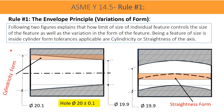In the first figure, a tolerance zone of cylindricity form error is shown, whereas in the second figure a tolerance zone for straightness error is shown. In both cases, the tolerance zones of cylindricity and straightness are both equal to the size limit variation, that is, plus or minus 0.1.